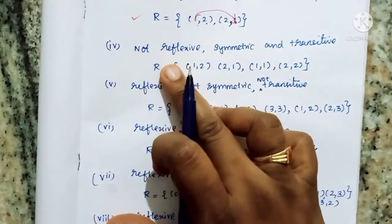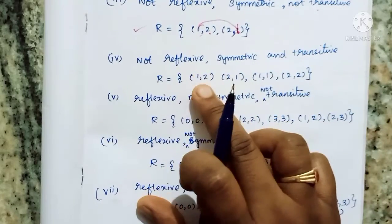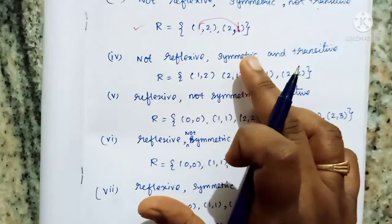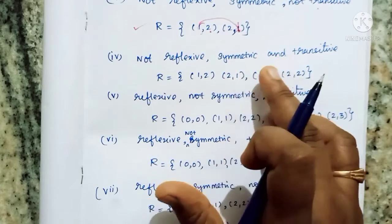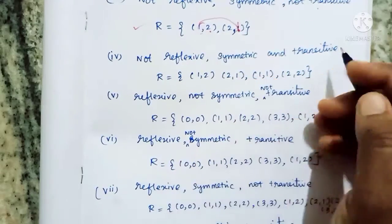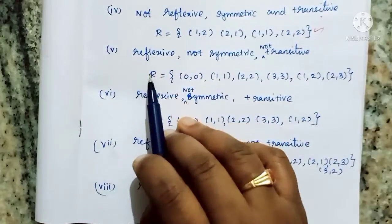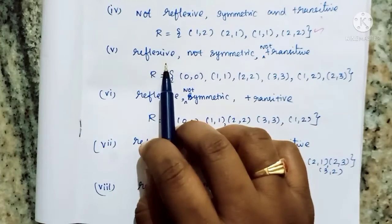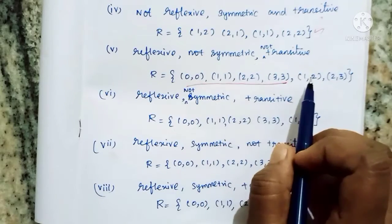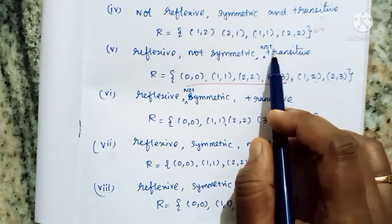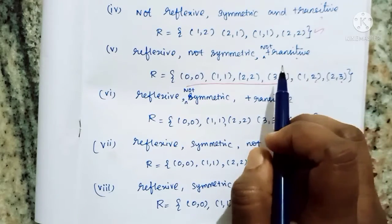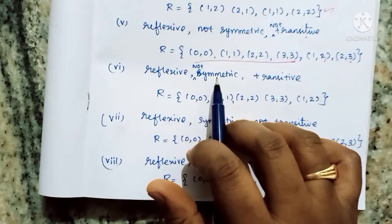Next is the fourth subdivision: not reflexive, symmetric, and transitive. We do not include reflexive pairs. If we want to make (1,2) and (2,1) — symmetric — then we do not have reflexive pairs. We need (1,2) and (2,1) for symmetry. For transitivity, if we have (1,2) and (2,3), we must add (1,3). Then changing to include (1,3) makes it transitive.